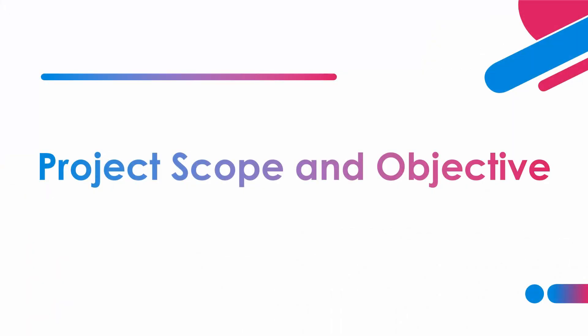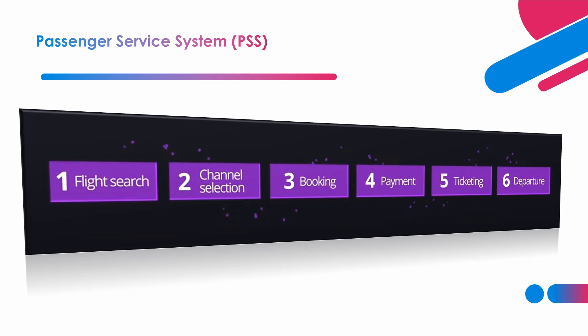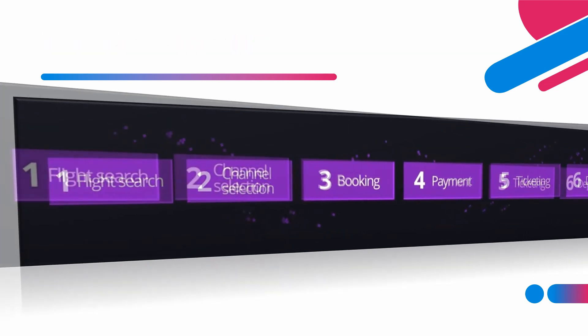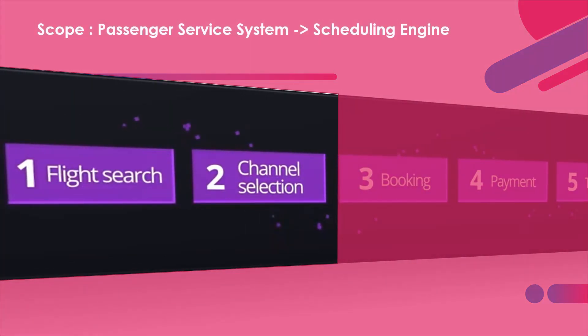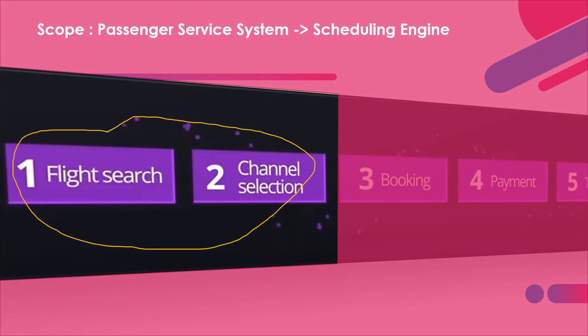Before we move ahead with designing the solution, let us define the scope and understand the project objective. An airline's passenger service system must deal with various components like flight search, booking, payment processing, ticketing and invoicing, ancillary services, boarding and departure, etc. Designing an architecture for such a system is vast, so today we will be concentrating on building a scheduling engine — just one part of the passenger service system, which is well-connected with other systems.